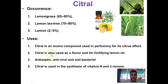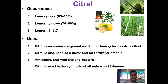Citral is also used as a food additive. It also has medicinal properties such as antiseptic, antiviral, and antibacterial activity. From a synthetic point of view, citral is used as a starting material for the synthesis of vitamin A as well as beta-ionone. Beta-ionone has useful applications in the perfume industry.